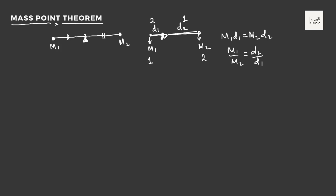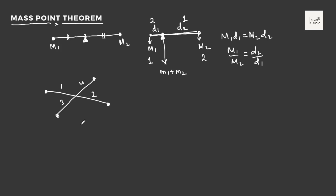Now we can use this concept in extension also, where we need to balance two lines. Suppose for an example, one line has the ratio 1:2 and the other has ratio 3:4. Then what will be the mass values at these four points so that they are in a balancing position? We can see that for straight line AB meeting line CD at O — looking only at AB, there is a fulcrum at point O and the ratio is 1:2, meaning the mass ratio would be 2:1, so here we have 2 and here we have 1.